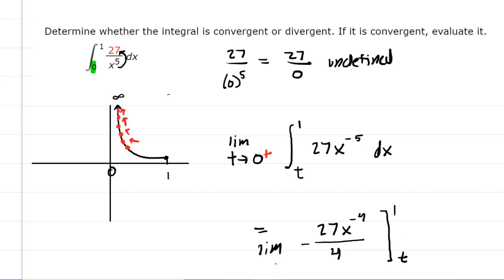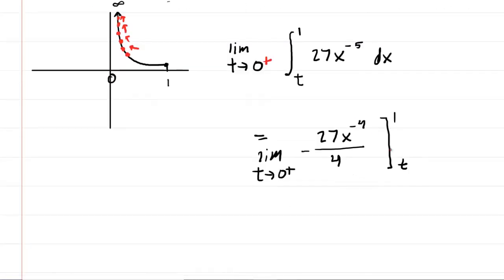And then we're going to evaluate this from t to one. And we still must make sure we take the limit as t approaches 0 from the right. To help us understand this, what we'll do is move the x to the denominator. And when you do that, you will no longer have x to the negative four, you'll have x to the positive four.